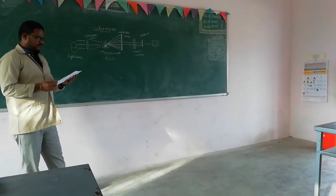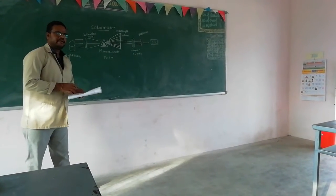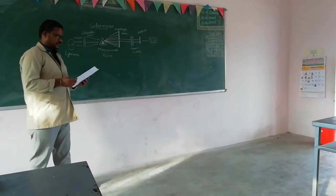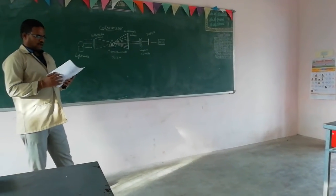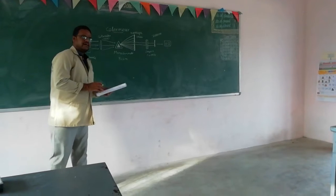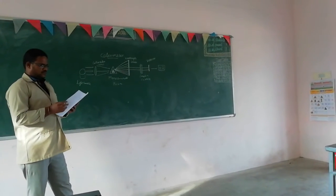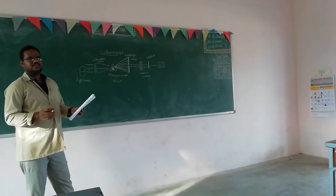The principle of the colorimeter: a monochromatic light passes through a colored solution, and some specific wavelength of the light is absorbed, which is related to the color density.